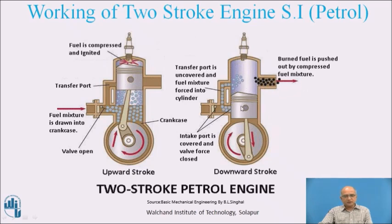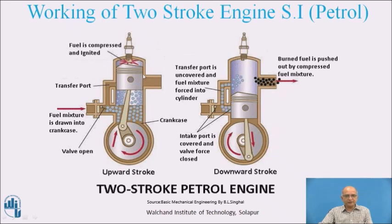When the piston moves upward during the second stroke, the transfer port closes first and compression begins. Then the exhaust port also closes, sealing the combustion chamber, and the upward piston movement compresses the charge. Simultaneously, as the piston moves up, the inlet port is uncovered, allowing fresh charge to enter the crankcase. So during this stroke, compression is happening at the top while suction into the crankcase is happening at the bottom. At the end of the upward stroke, compression is complete and the spark plug generates a spark — completing the cycle.